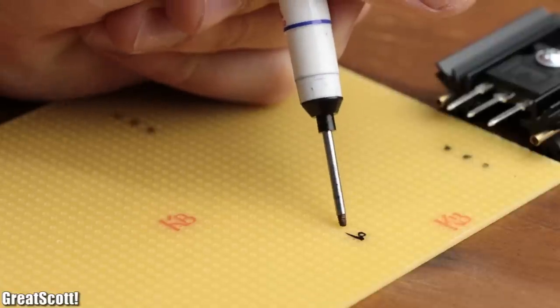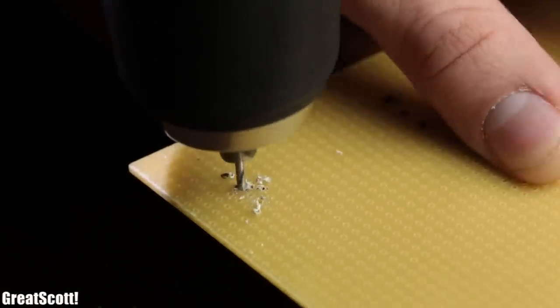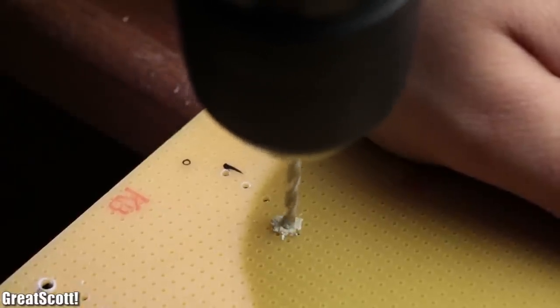Afterwards, I marked a suitable position for them on the perfboard and enlarged the pin holes to a diameter of 1.5 millimeters and the heatsink holes to a diameter of 2.5 millimeters.